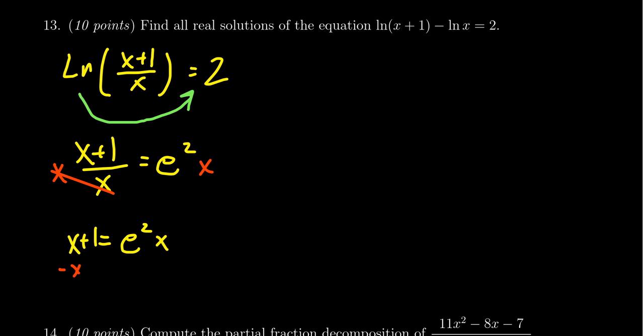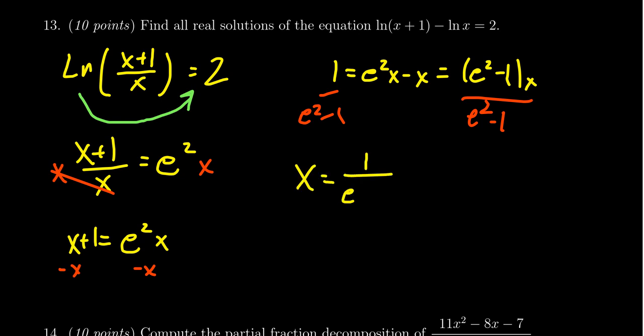If I subtract x from both sides, the left-hand side becomes 1. The right-hand side becomes e squared x minus x. We want to add together the coefficients, or factor out the x, which gives (e squared minus 1)x. That's now the coefficient of x. Divide both sides by e squared minus 1, and we get x equals 1 over (e squared minus 1).